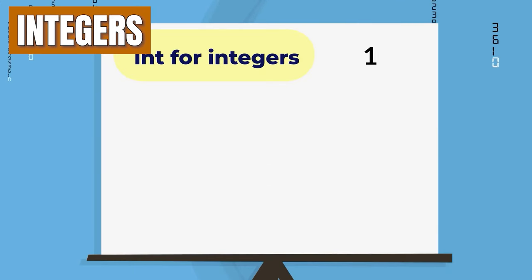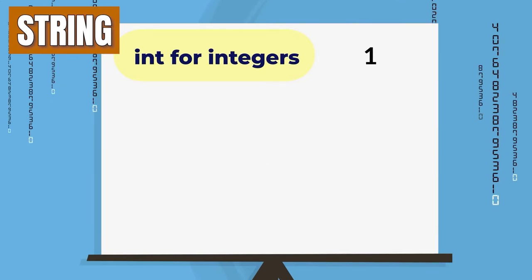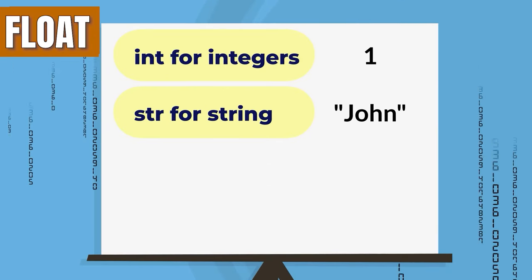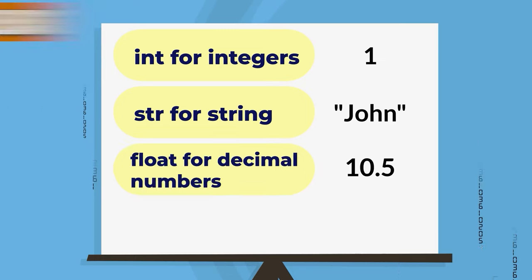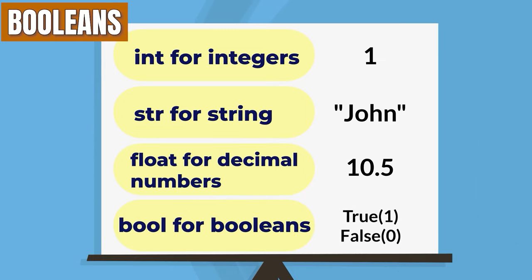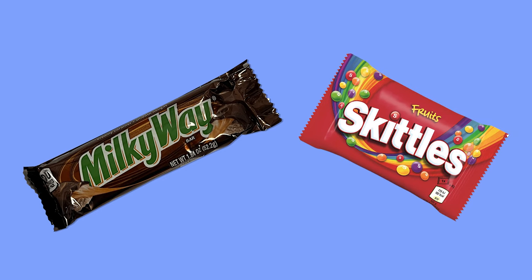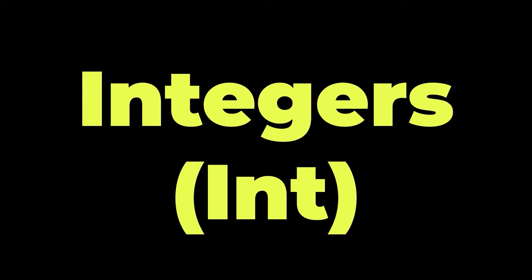Int for integers, str for strings, float for decimal numbers, and bool for booleans. It's like sorting your Halloween candy — you wouldn't throw your Milky Ways and Skittles into the same bowl, would you?